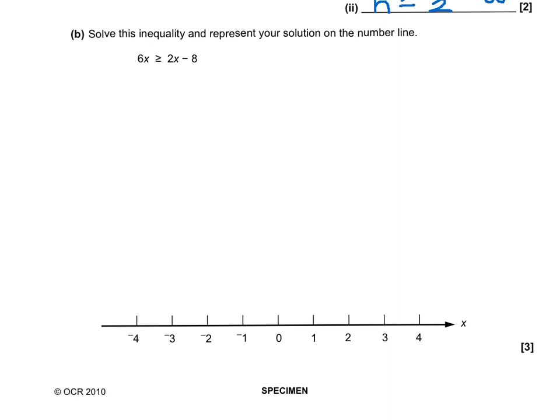Now, to do that, we can just solve it just like any normal equation. We need to find x on one side and the number on the other. So we need to get rid of this 2x from both sides to start. Now, that leaves us with 6x, take away 2x, which is 4x, and the fancy symbol. And on the right-hand side, we've just got minus 8.